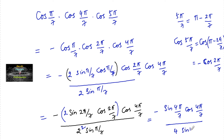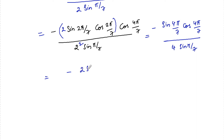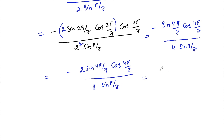Applying the double angle identity one more time, this equals minus 2 sin(4π/7) cos(4π/7) divided by 8 sin(π/7), which simplifies to minus sin(8π/7) divided by 8 sin(π/7).